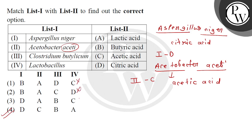Now if we look at the next one, Clostridium butylicum. If we talk about this, the name itself shows 'butylicum', so it will produce butyric acid. So the third answer is B.